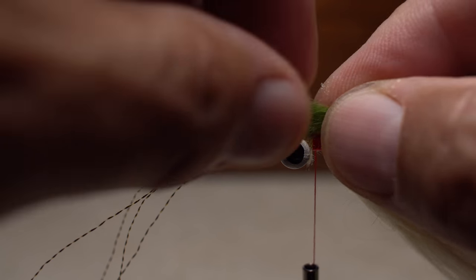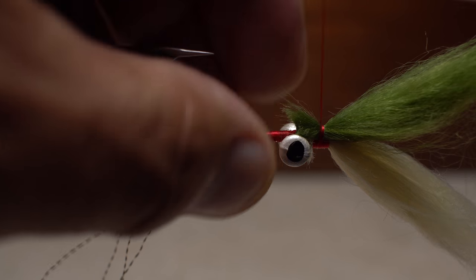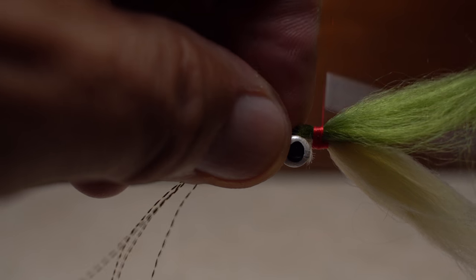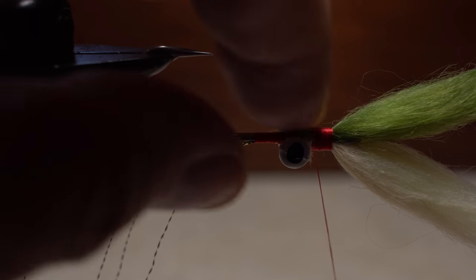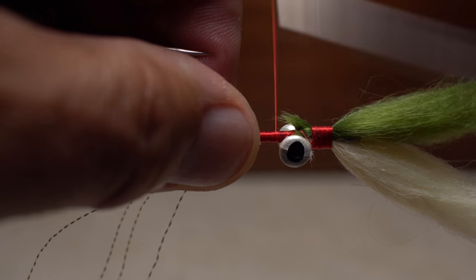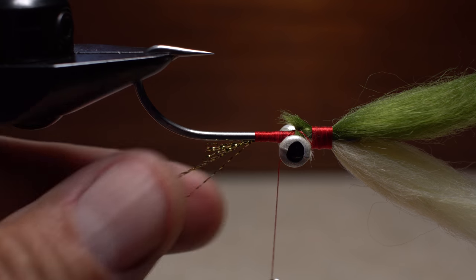Again, snip the butt ends off square, and then get them tied in, this time on the underside of the hook shank. Don't be afraid to really crank the wraps on to bind the fur down. With everything secured, relocate your tying thread to right behind the dumbbell eyes.